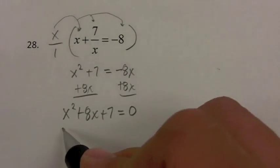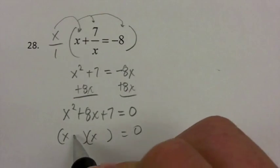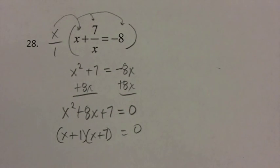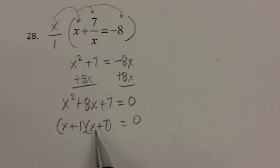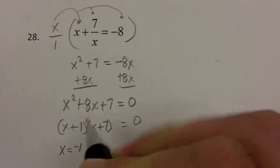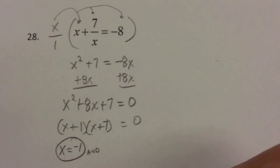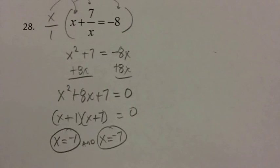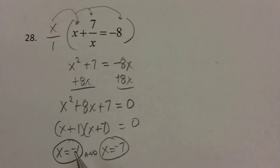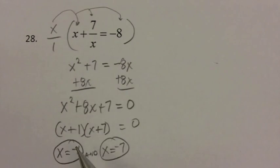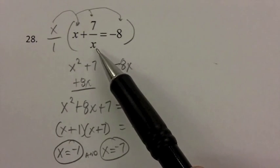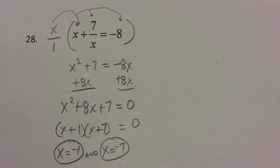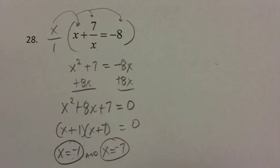Since I have an x squared term, the only way to solve this is to get everything on one side, factor, and find the zeros. I add 8x to both sides to get x squared plus 8x plus 7 equals 0. Factoring: x and x, both positive — 7 and 1 multiply to give me 7 and add to give me 8, so (x plus 1)(x plus 7) equals 0. That gives solutions x equals negative 1 and x equals negative 7. I check that neither makes a denominator zero — the only denominator is x, and neither answer is 0 — so both solutions are valid.